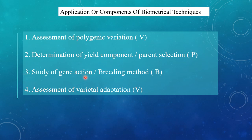In the third component we will see how to assess gene action and, based on that gene action, what breeding methods to use. For example, if additive gene action is present in a character, we can use mass selection, progeny selection, etc. But if there is non-additive gene action present, we can go for heterosis breeding. This way we can plan our breeding method accordingly.